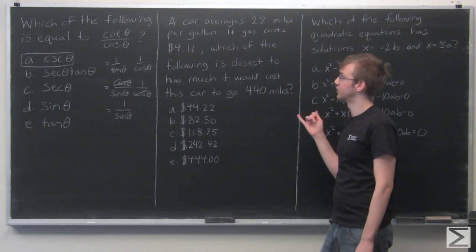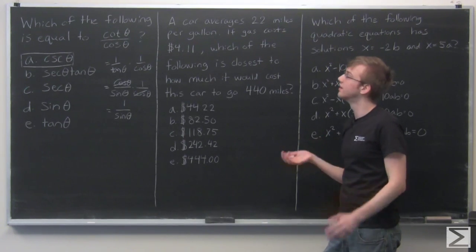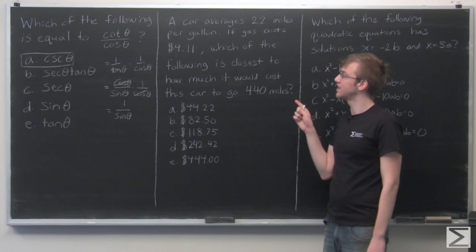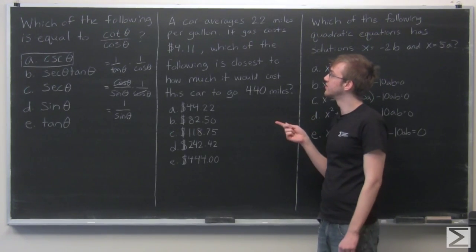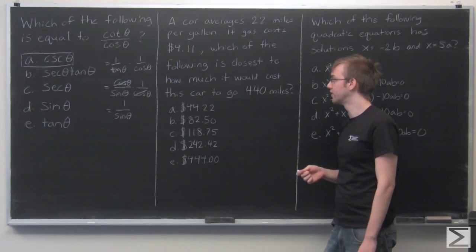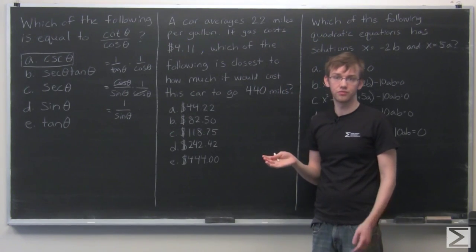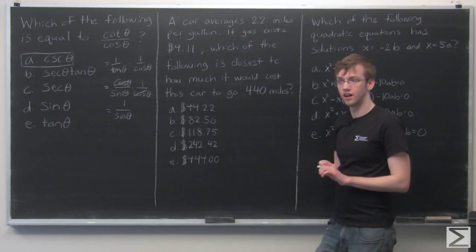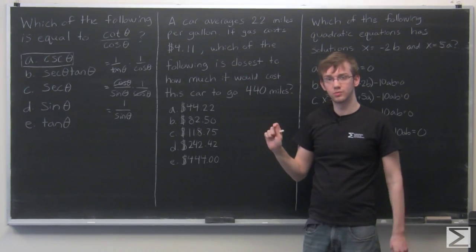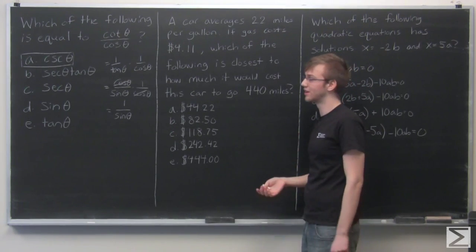All right, our next question has to do with rates of travel and miles per gallon. A car averages 22 miles per gallon. And if gas costs $4.11, which of the following is closest to how much it would cost this car to go 440 miles? Now because the problem says closest, I'm guessing we're going to have something of an estimate here. So these decimal values, 4.11, we may not have to do exact values for that, which already makes things slightly easier for us.